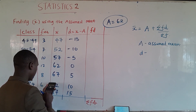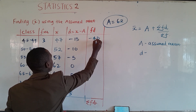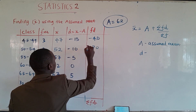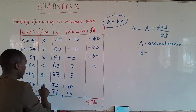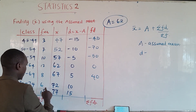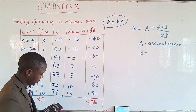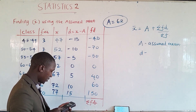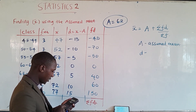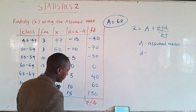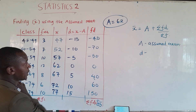Next, we multiply f by d to get the fd column. So: −15 × 3 = −45; then −10 × 7 = −70; then −5 × 10 = −50; then 0 × 12 = 0; then 5 × 8 = 40; then 10 × 6 = 60; and finally 15 × ... = 80. Summing all fd values: 80 + 60 + 40 + (−50) + (−70) + (−45) = 85. So the summation of fd is 85.